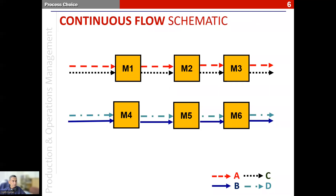The schematic for a continuous flow is like this. It is very intuitive that the machines would all be in sequence, and the product or products which go on a line will follow the same sequence of machines or stages required to process that item.